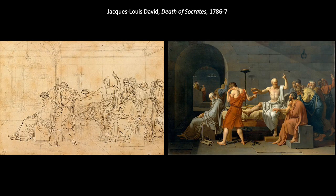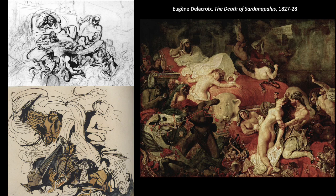Here's another example — Jacques-Louis David's Death of Socrates from 1786–87 — where the artist used a preliminary sketch to plan the larger project. And one more example: Eugène Delacroix's Death of Sardanapalus from 1827–28. Similar theme to David's Death of Socrates, but approaching the preparation drawings differently — exploring values and gestural lines in the bottom left sketch to capture the energy and movement he wanted in the final painting, then defining forms and figures more precisely in the top left.